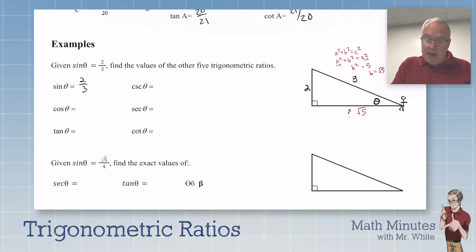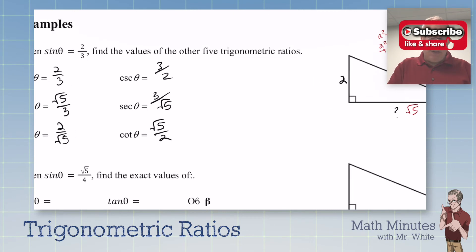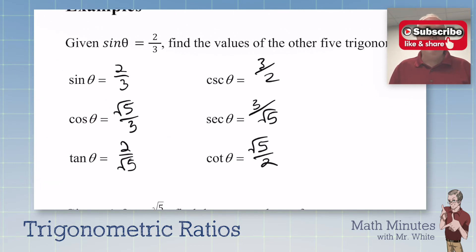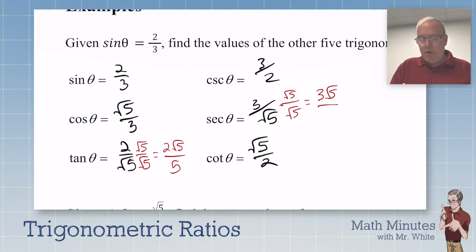All right, so that means cosine is radical five over three. Tangent is two over radical five. And then we flip all of these over for our reciprocal functions. Now, there's something else I need to talk about before we go on here, because a couple of these answers are not simplified. You're not supposed to leave radicals in the denominator. So I'm going to multiply by the number one, and I get two radical five over five. Over here, I'm going to multiply by radical five over radical five, and I get three radical five over five. So I simplified. It's called rationalizing the denominator on those two.